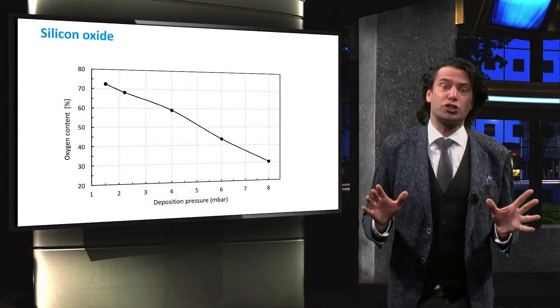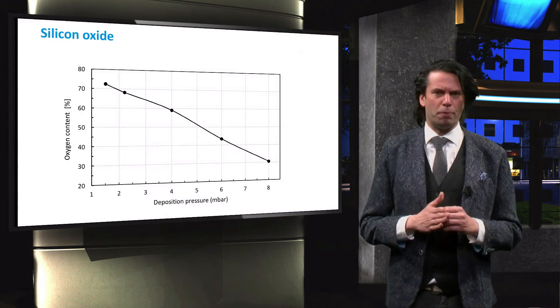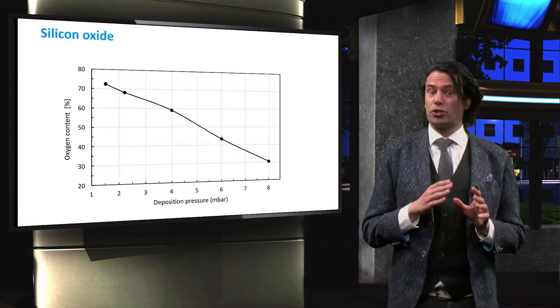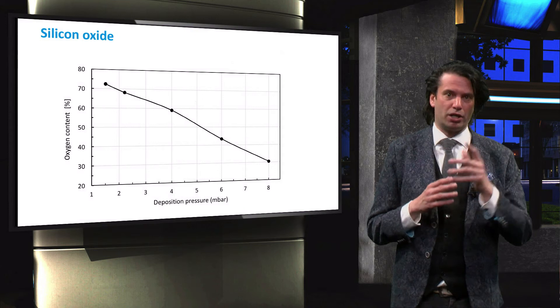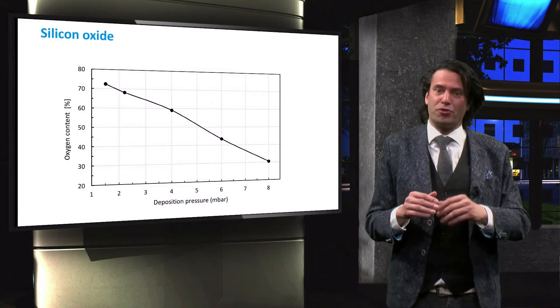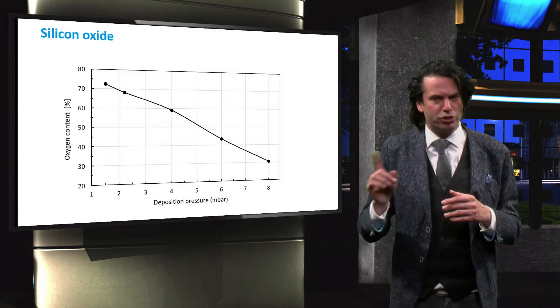Plotted in this graph is the oxygen content of a p-doped silicon oxide material as a function of the pressure during the deposition. The oxygen content decreases from over 70% at 1.5 mB to about 30% at 8 mB. Naturally, the decreasing oxygen content has important implications for the optical properties of the material.